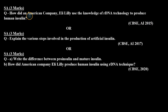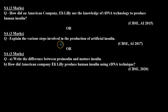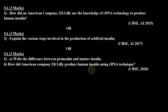The question is: how did an American company Eli Lilly use the knowledge of rDNA technology to produce human insulin? Or, as a short answer type question of three marks asked in CBSE board All India examination 2017: explain the various steps involved in the production of artificial insulin. Or, as asked in CBSE board 2020 Part A: write the difference between proinsulin and mature insulin, and Part B: how did American company Eli Lilly produce human insulin using rDNA technique?